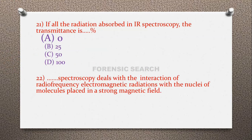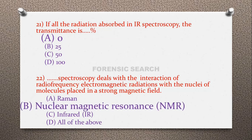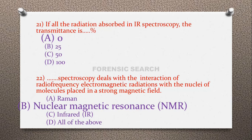Question 22: Which spectroscopy deals with the interaction of radio frequency electromagnetic radiations with the nuclei of molecules placed in a strong magnetic field? Option A: Raman spectroscopy, option B: NMR spectroscopy, option C: infrared spectroscopy, option D: all of the above. The correct answer is option B — NMR spectroscopy deals with the interaction of radio frequency electromagnetic radiations with nuclei in a strong magnetic field.